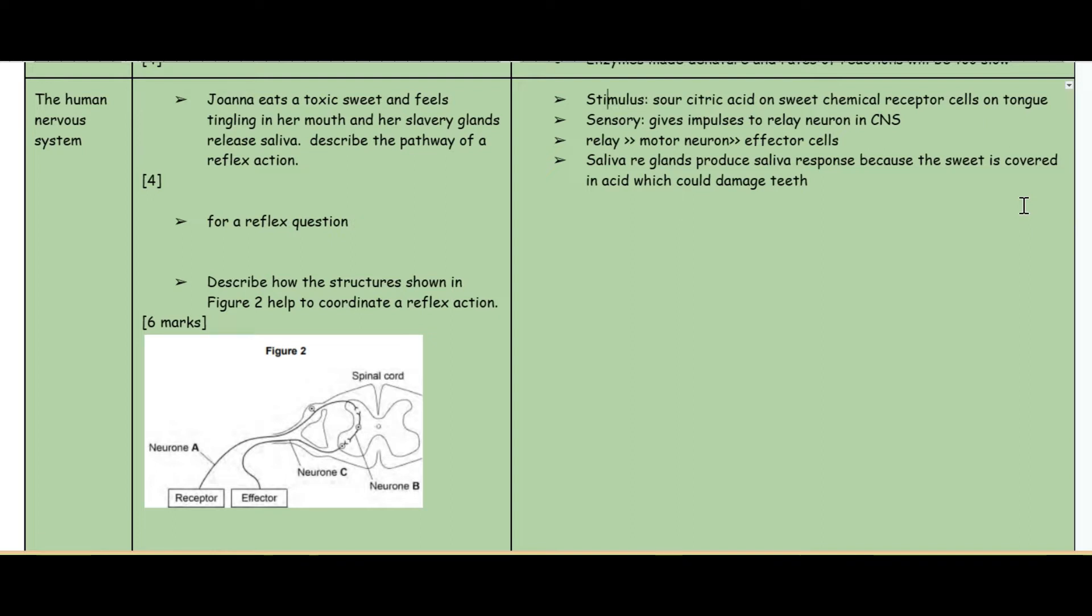The relay neuron to the motor neuron, the motor neuron to the effector cells which carry out the response. In this case the effector cells are the salivary glands which produce saliva as a response because the sweet is covered in acid and that could damage the teeth. So that is a reflex action.